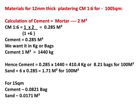For sand in a 1:6 ratio, we multiply 6 by the cement volume of 0.285 cubic meters, giving 1.71 cubic meters of sand for 100 square meters. Breaking this down per square meter by dividing by 100: cement is 0.082 bags and sand is 0.0171 cubic meters per square meter.